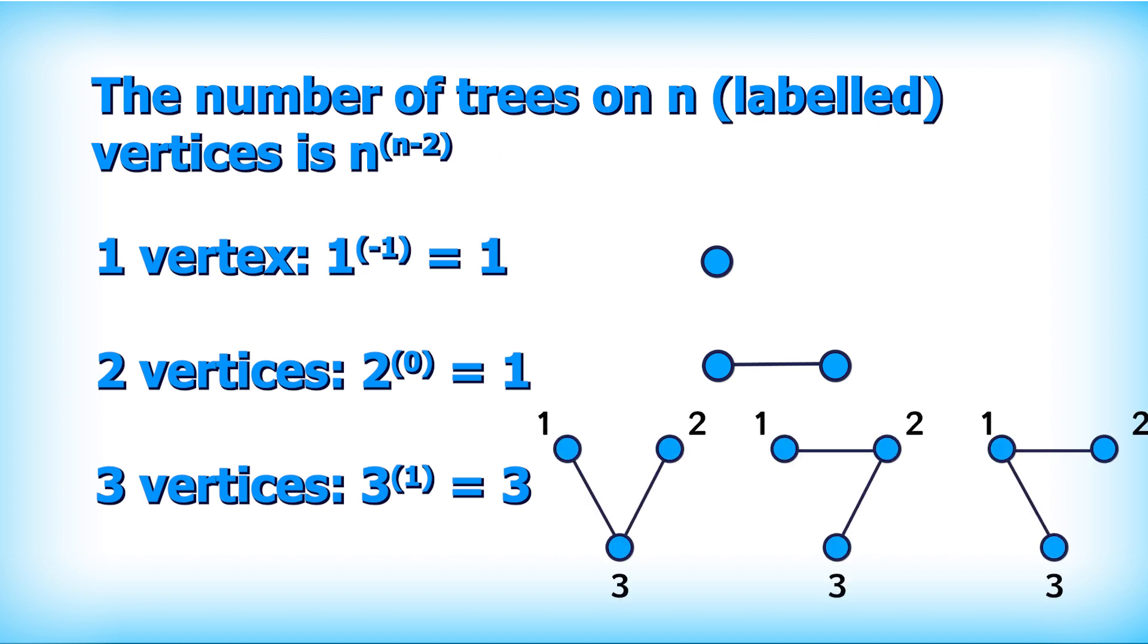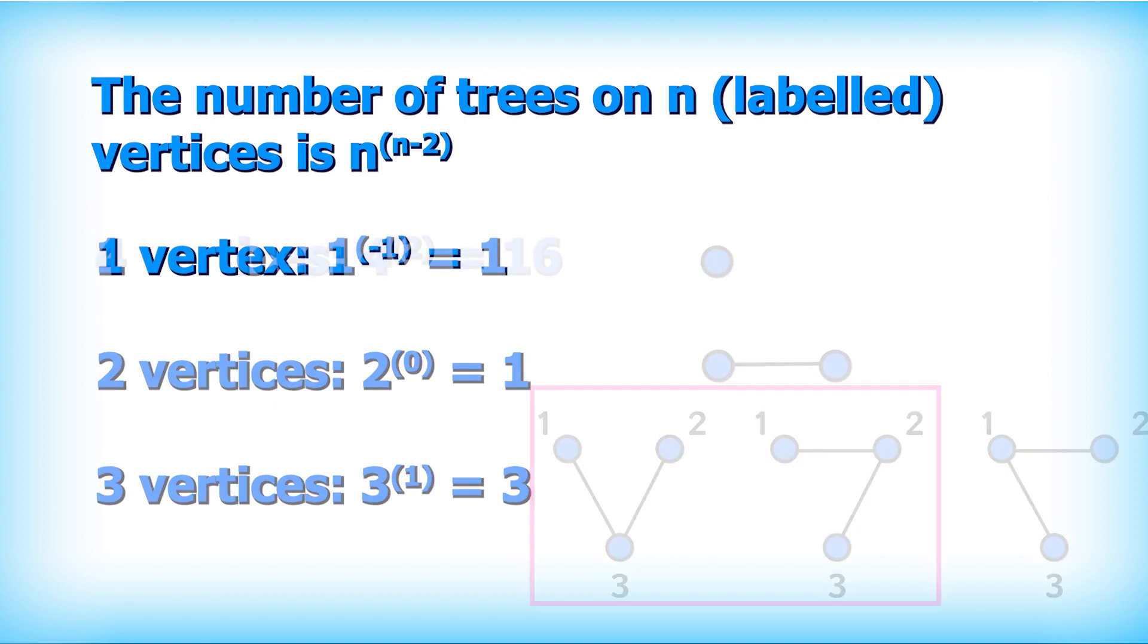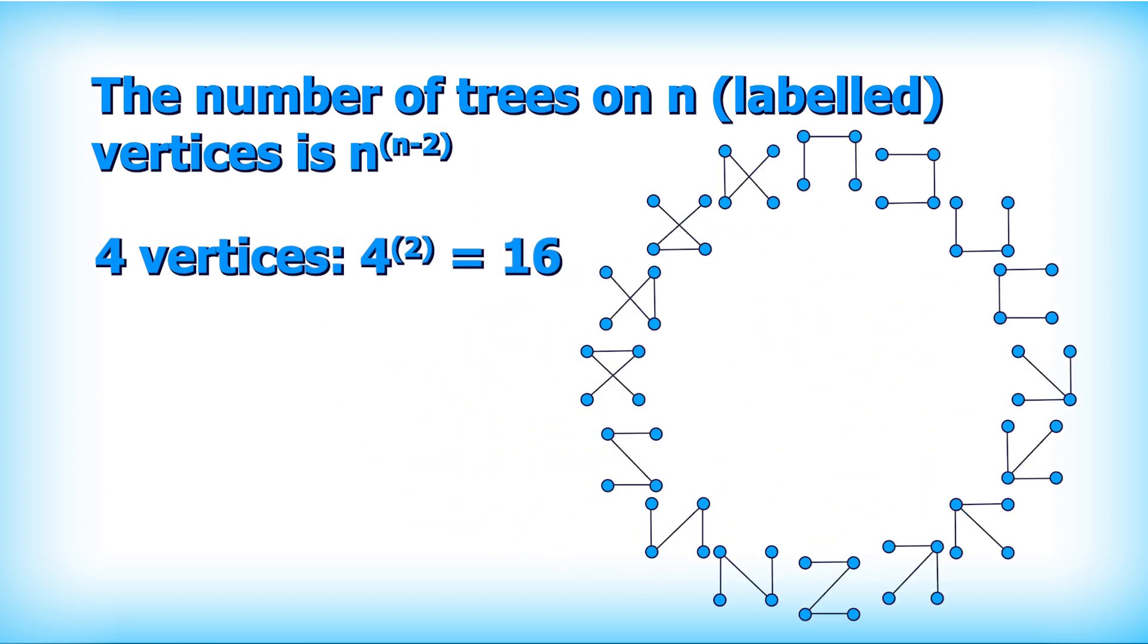The vertices are labelled, so these two are different trees for example. By the time we get to four vertices, there's 4 to the power of 2 or 16 different trees.